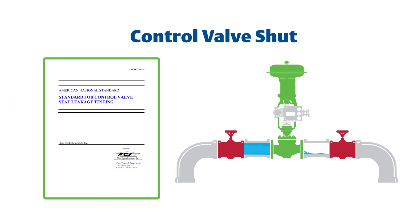A control valve's allowable acceptable leakage rate is specified by ANSI/FCI 70.2 and IEC 60534-4.